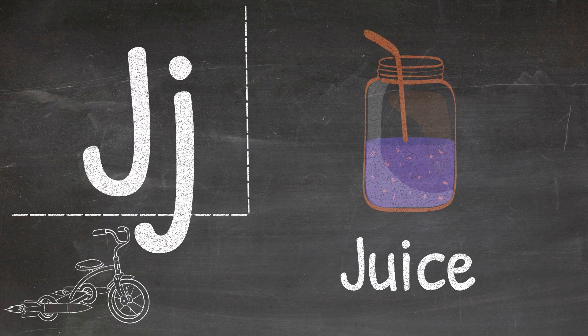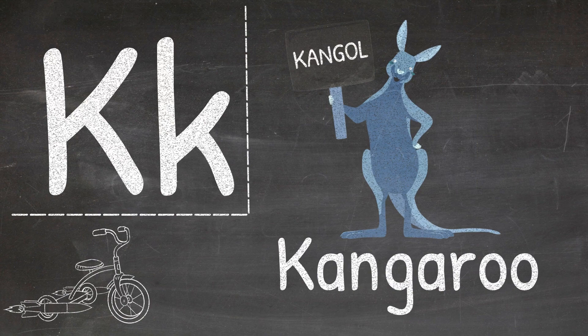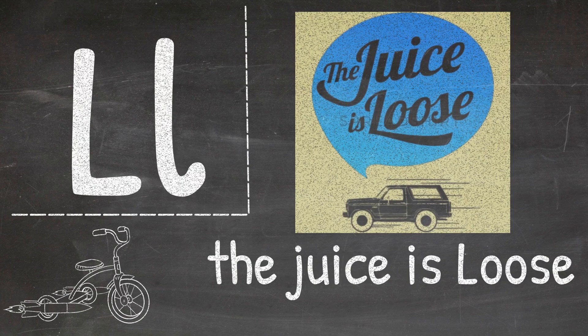I is for icy, J is for juice, K is for kangaroo, L is for the juices loose.